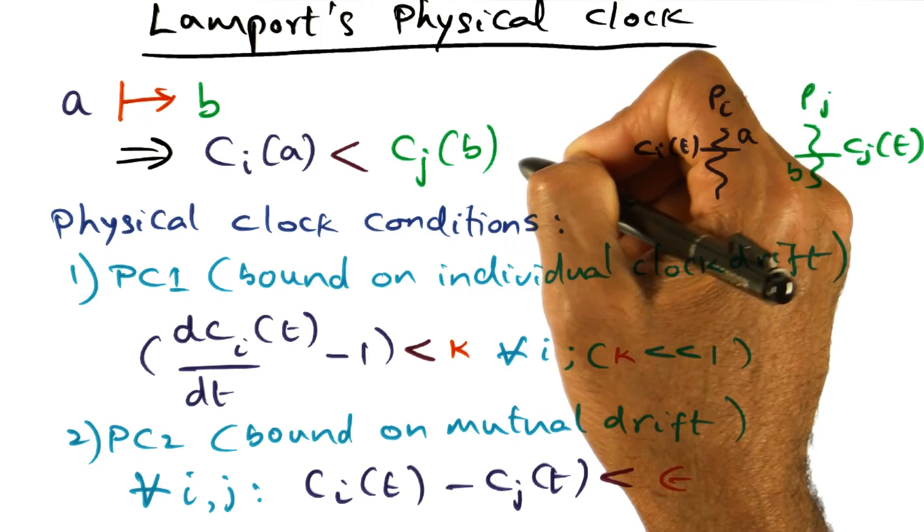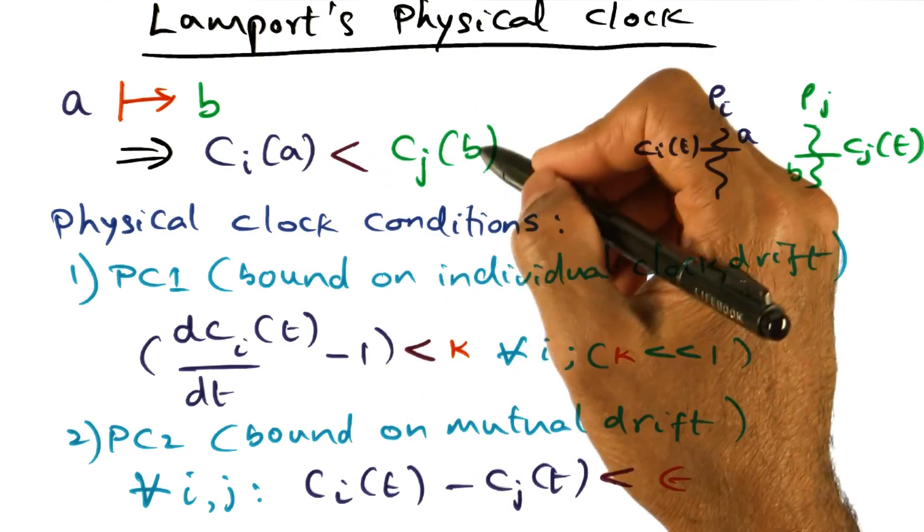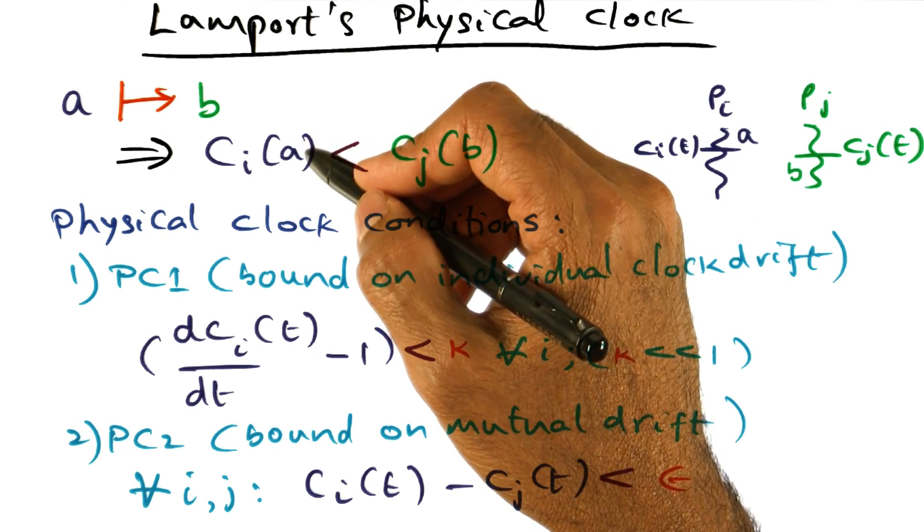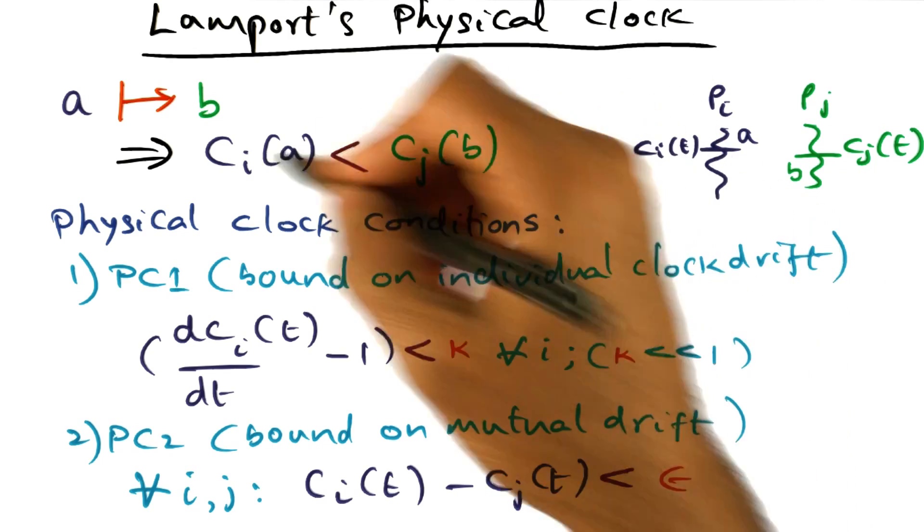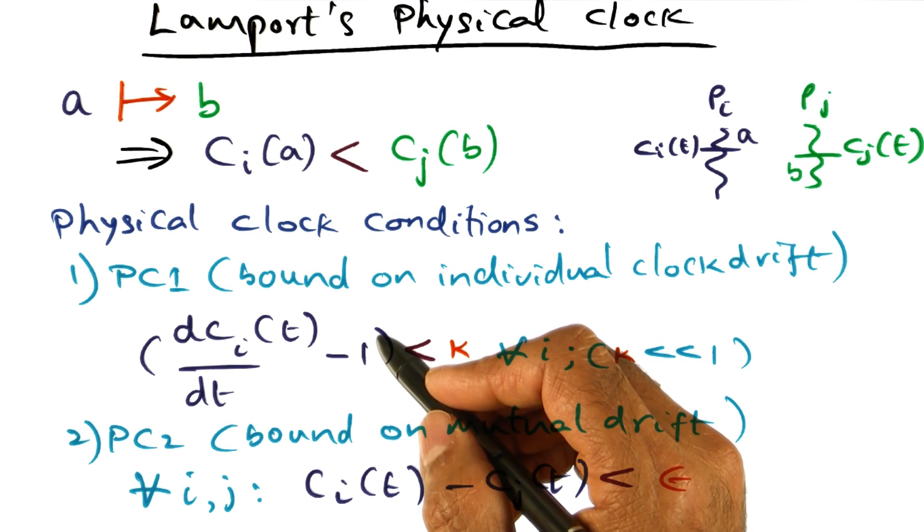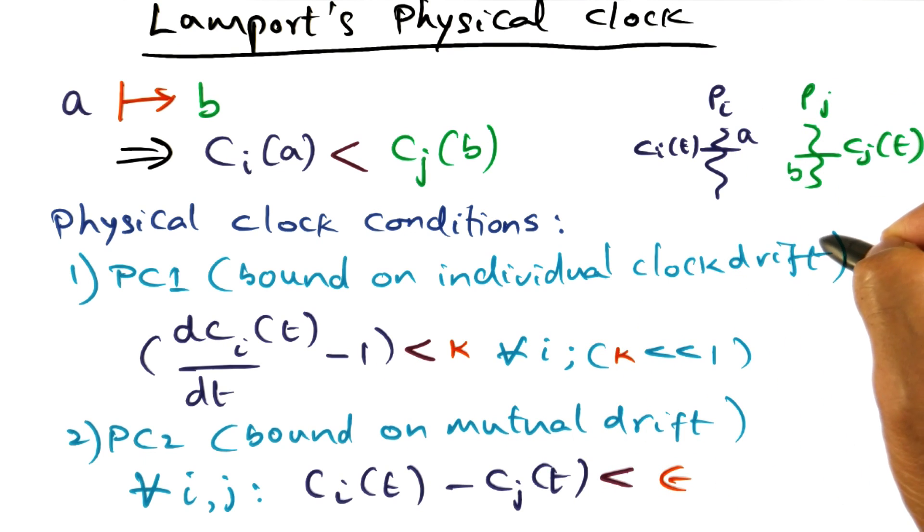So to guarantee this, and we are talking about real time here, so real time stamp associated with A and B. In order to ensure that the real time associated with these events give you this guarantee, you have to have certain conditions associated with the clocks that are on the machines PI and PJ.